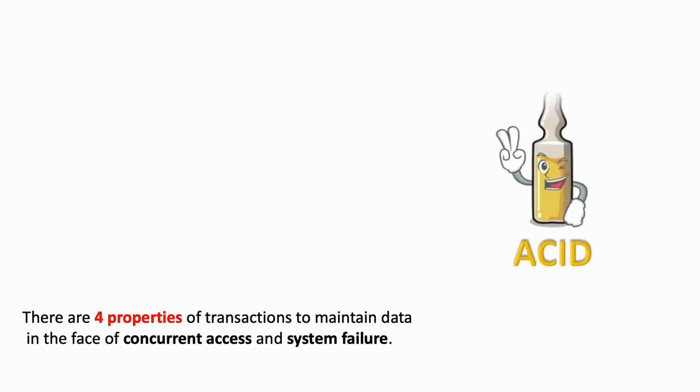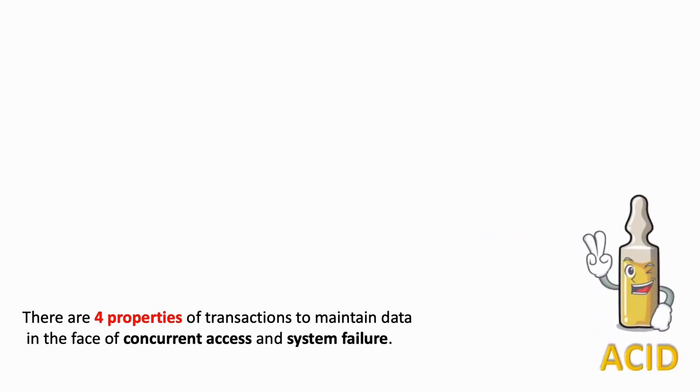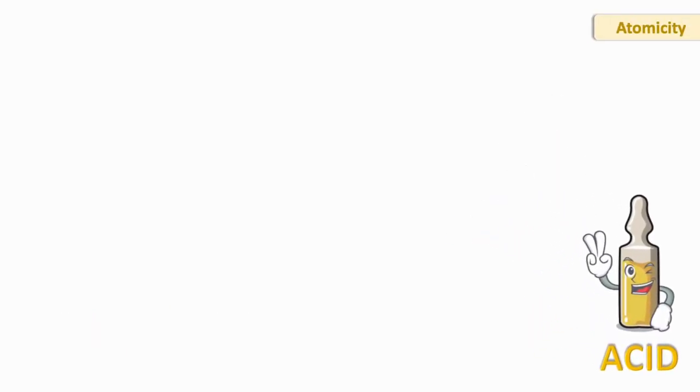ACID is an acronym for those properties. A stands for atomicity, C stands for consistency, I for isolation, and D stands for durability. ACID is a set of properties of database transactions in order to ensure accuracy, completeness, and data integrity.